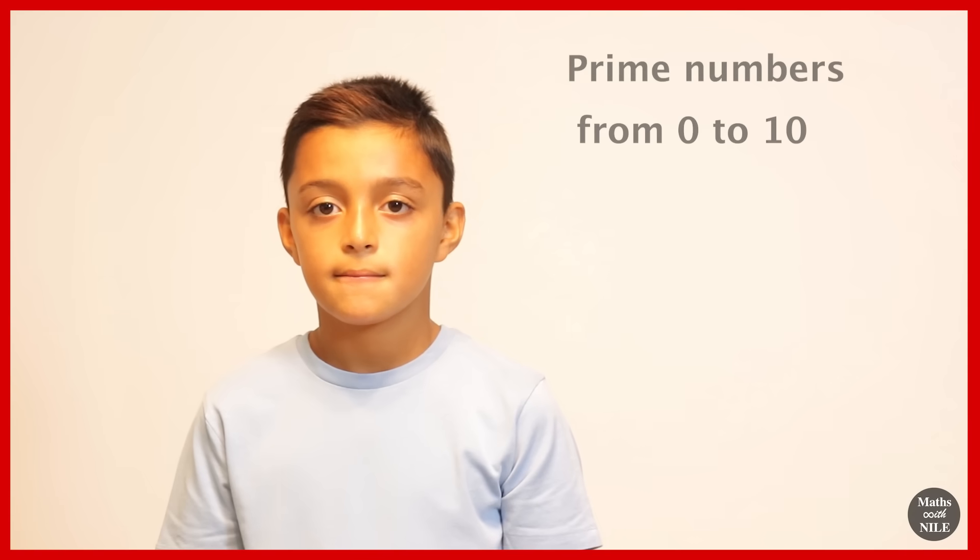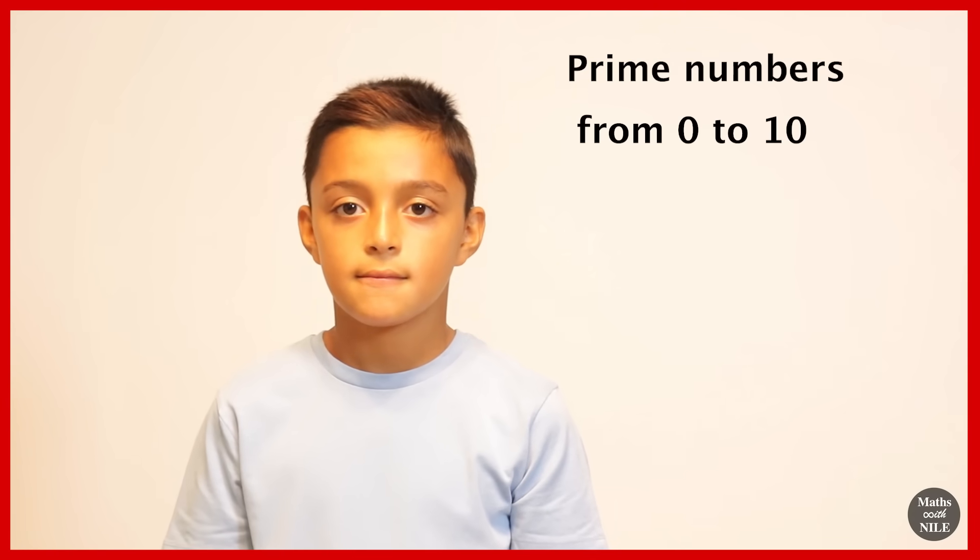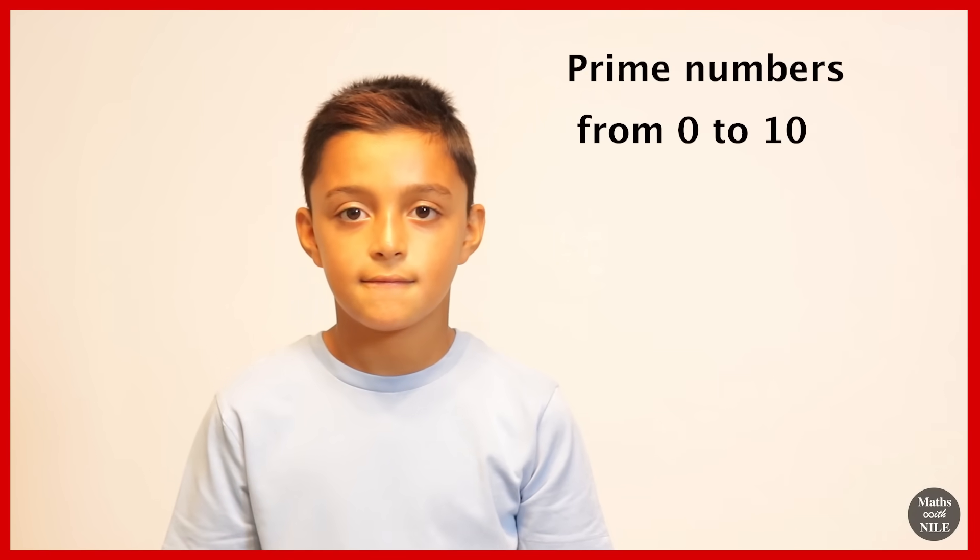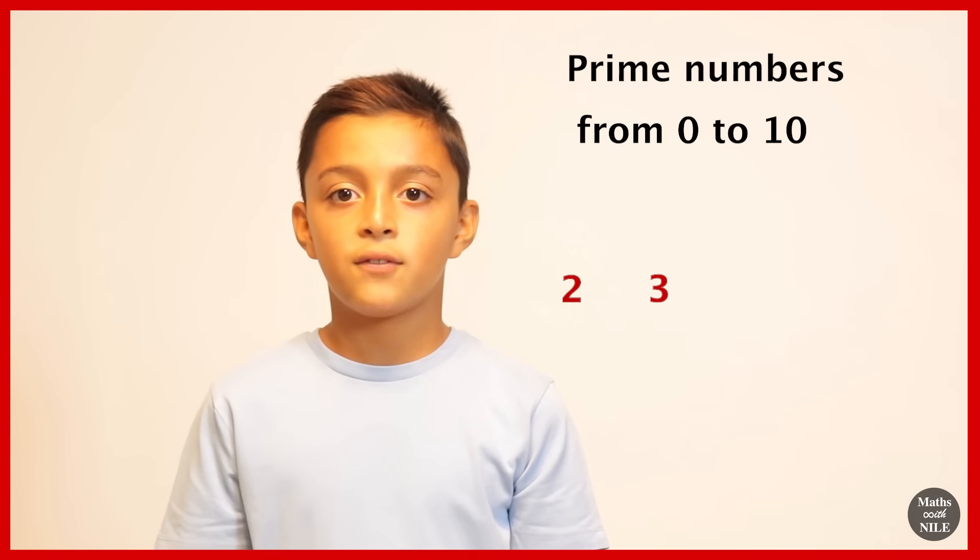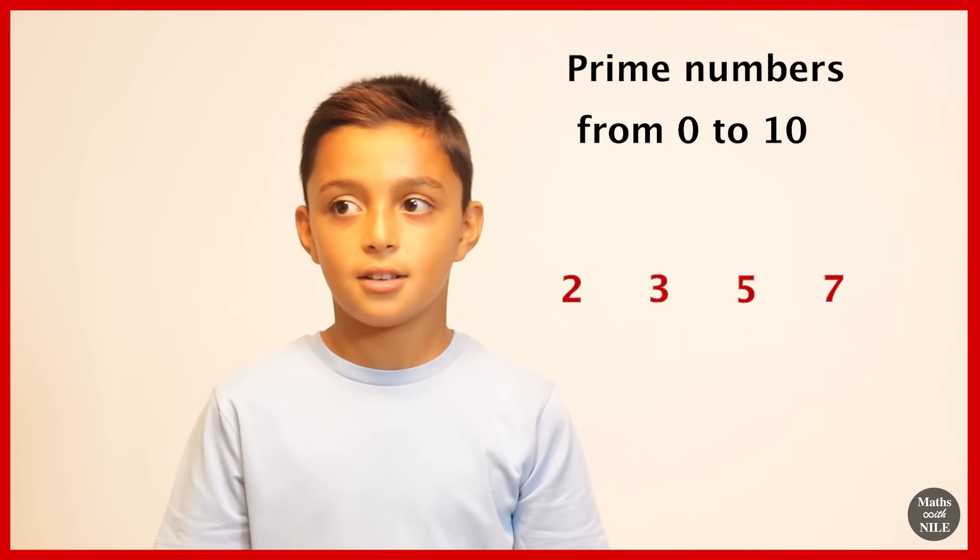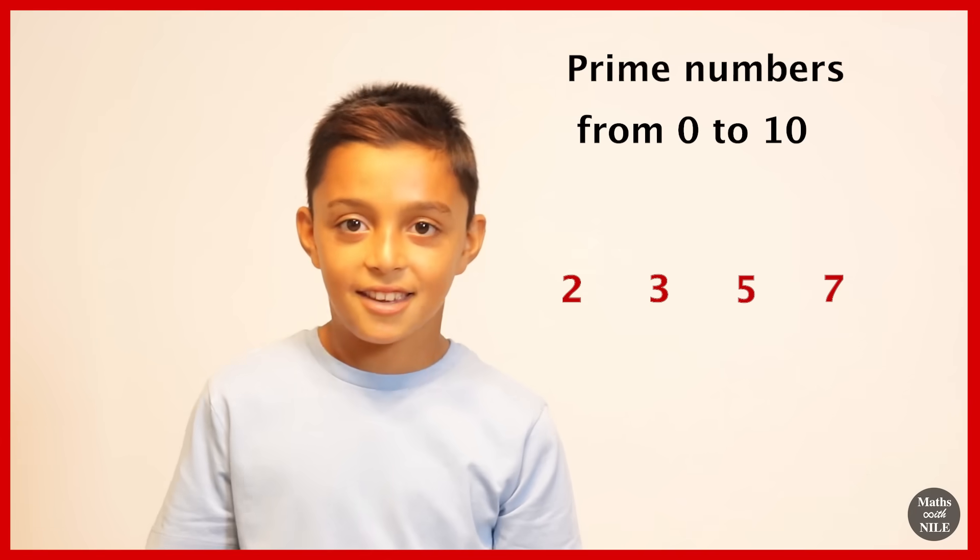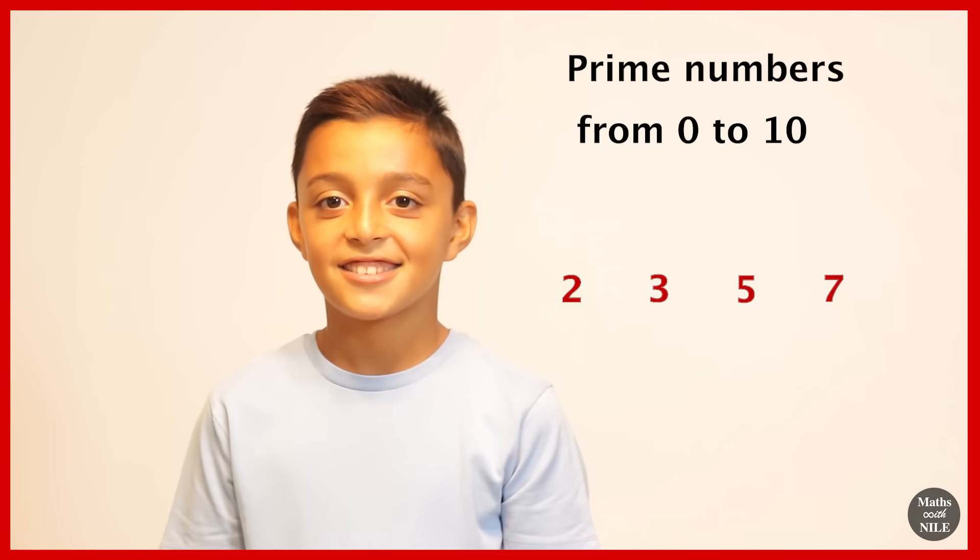Prime numbers between zero and ten in ascending order. Two, three, five, seven. Yeah, that's it. Two, three, five and seven. Okay.